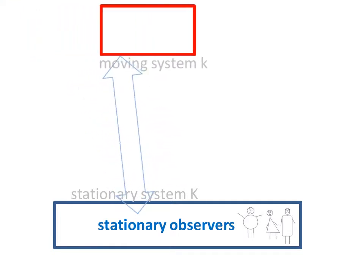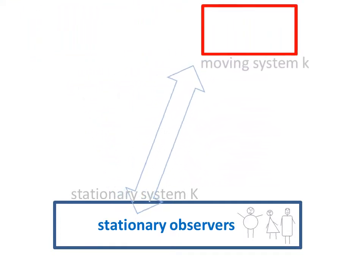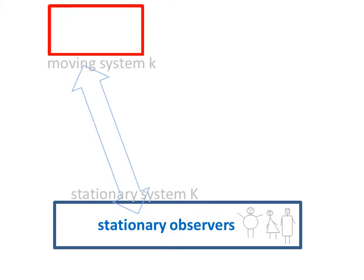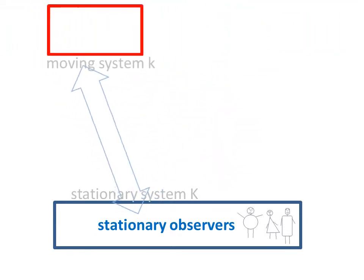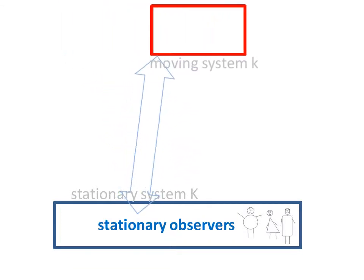Sometimes it is considered necessary to know what the results of spatial and temporal measurements might be, if these measurements are done by observers at rest with a system, denoted by lowercase k.